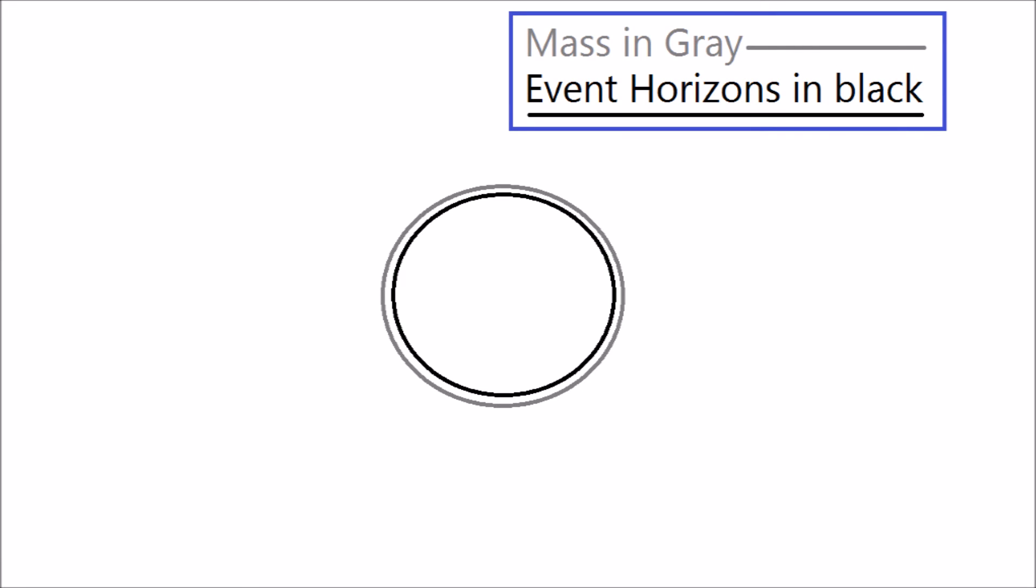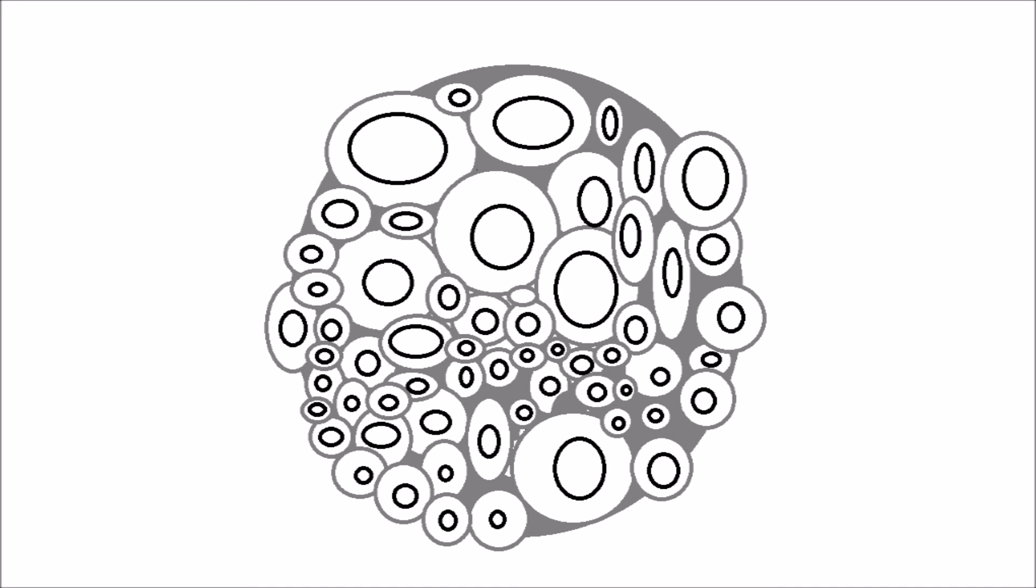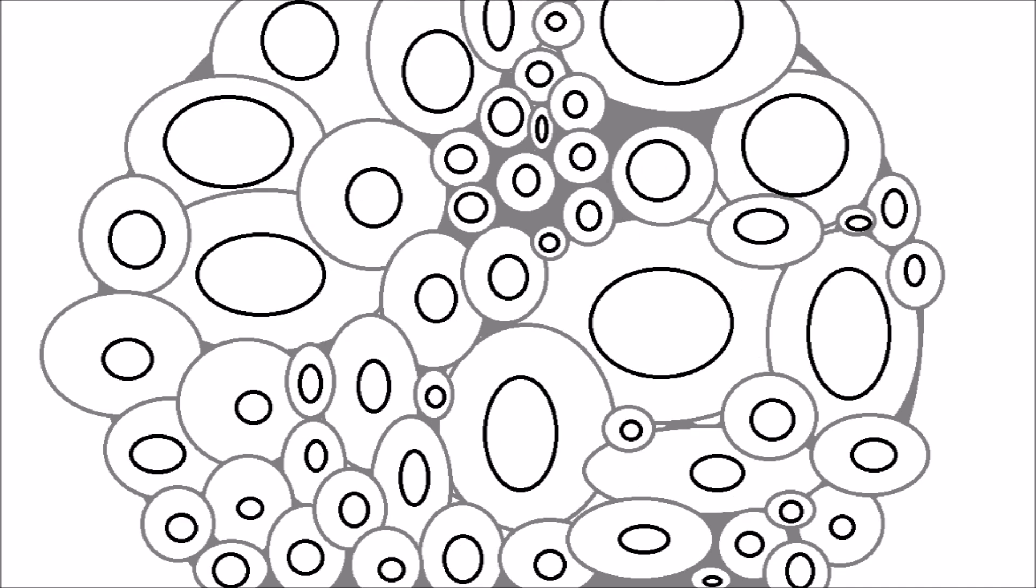This means that all the mass of the black hole piles up around the event horizon and would thus undergo gravitational collapse forming new black holes. The mass collapsing around those black holes would also undergo gravitational collapse, and so on and so forth.